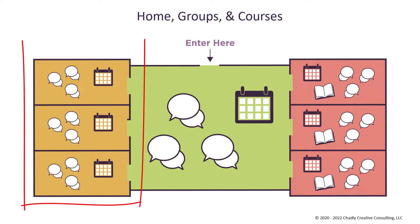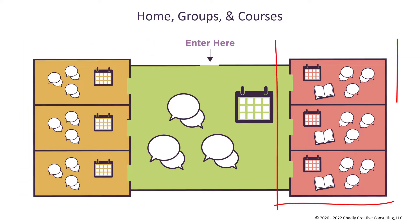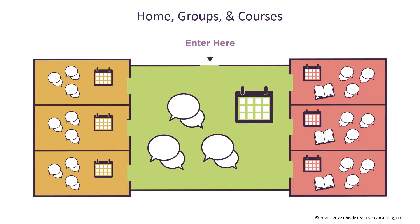Groups are a smaller version of what you can do inside the home area. Courses have those same features, and they also have an additional area — the table of contents — where you can put ordered content. The table of contents is often used to hold course materials or even to be a resource library. Topics are available inside all three of these areas, and they can each have their own set of topics.